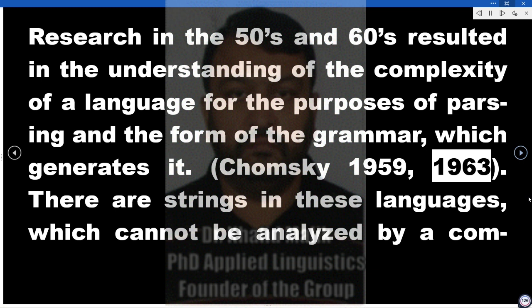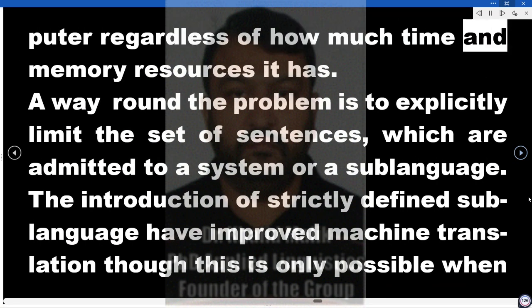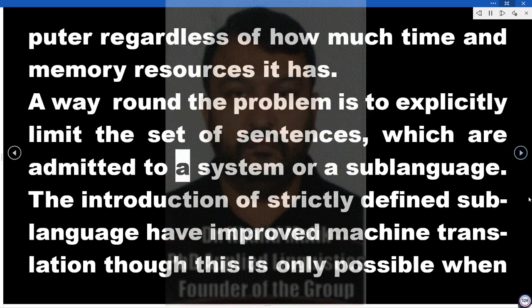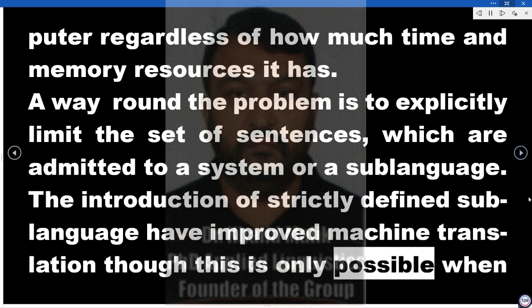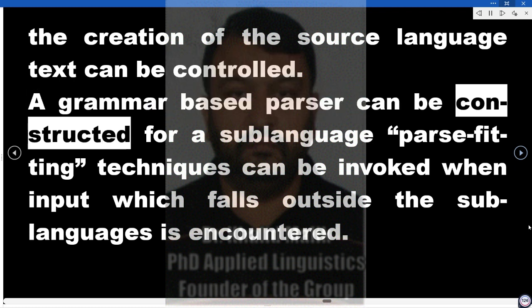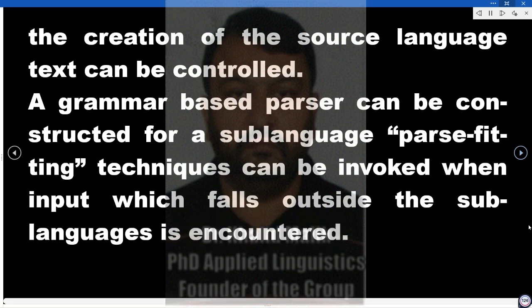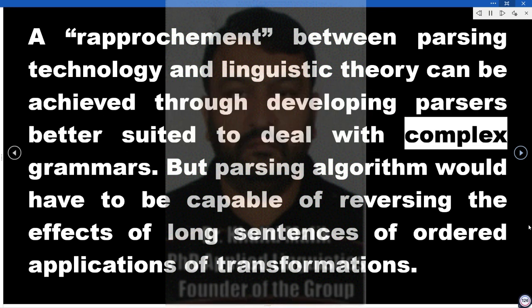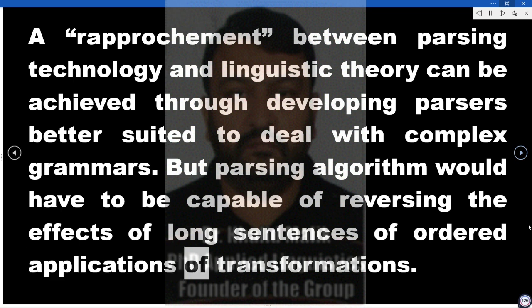Research in the 1950s and 1960s, following Chomsky (1959, 1963), resulted in the understanding of the complexity of a language for the purposes of parsing and the form of the grammar which generates it. There are strings in these languages which cannot be analyzed by a computer regardless of how much time and memory resources it has. A way around the problem is to explicitly limit the set of sentences admitted to a system — a sublanguage. The introduction of strictly defined sublanguages has improved machine translation, though this is only possible when the creation of the source language text can be controlled. A grammar-based parser can be constructed for a sublanguage, and parse-fitting techniques can be invoked when input falling outside the sublanguages is encountered. A parsing algorithm would have to be capable of reversing the effects of long sentences of ordered applications of transformations.